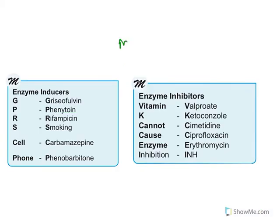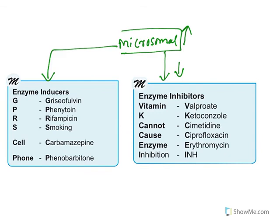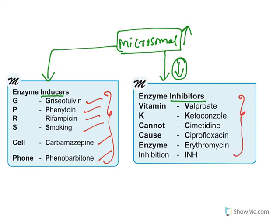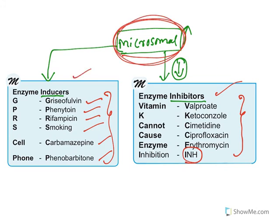Microsomal enzymes can undergo induction or inhibition. Induction means certain drugs increase microsomal enzyme activity, and inhibition means certain drugs reduce it. Drugs that increase enzyme activity are known as enzyme inducers — examples include griseofulvin, phenytoin, rifampicin, smoking, carbamazepine, and phenobarbital. Drugs that inhibit enzyme activity are known as enzyme inhibitors — examples include valproate, ketoconazole, cimetidine, ciprofloxacin, erythromycin, and isoniazid (INH). This induction or inhibition applies only to microsomal enzymes; non-microsomal enzymes do not have this capability.